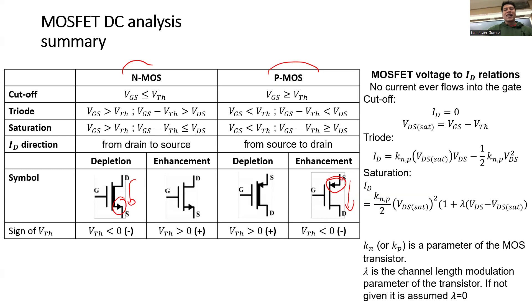So if you look at these inequalities: VGS is less than means VGS is more than, and VGS is greater than means VGS is less than, and so on.